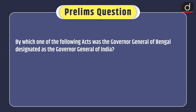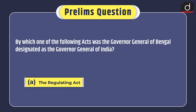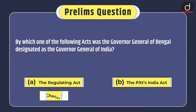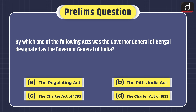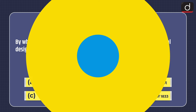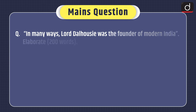Now it's time for the practice question. Prelims question: by which one of the following acts was the Governor General of Bengal designated as the Governor General of India? The Regulating Act, the Pitt's India Act, the Charter Act of 1793, or the Charter Act of 1833? You can send the answer in the comment section. The main question: in many ways, Lord Dalhousie was the founder of Modern India — elaborate. That's all for today. Stay tuned for the next episode. Thanks for watching.